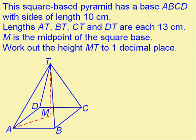Here's another type of question for you. This time you're looking for the height MT, which is this here. You're told that the sides of the base are 10cm long. So this is 10cm and this is 10cm. And you're told that AT, BT, CT and DT are all 13cm. So this here is 13cm.